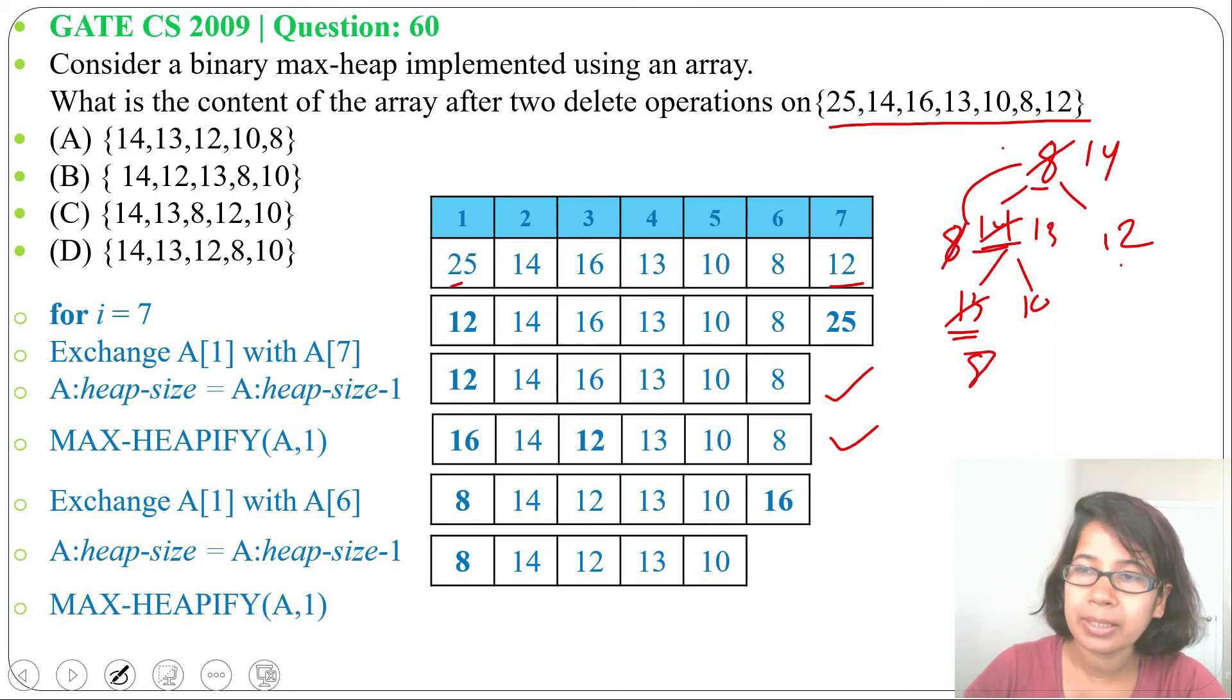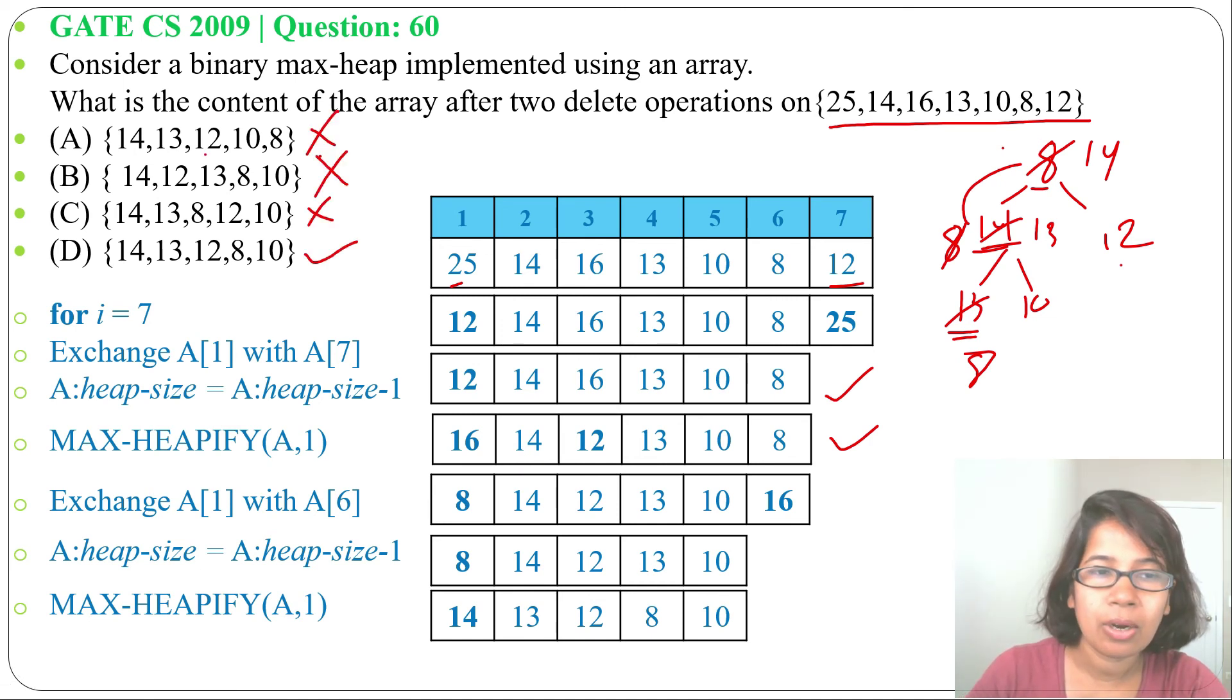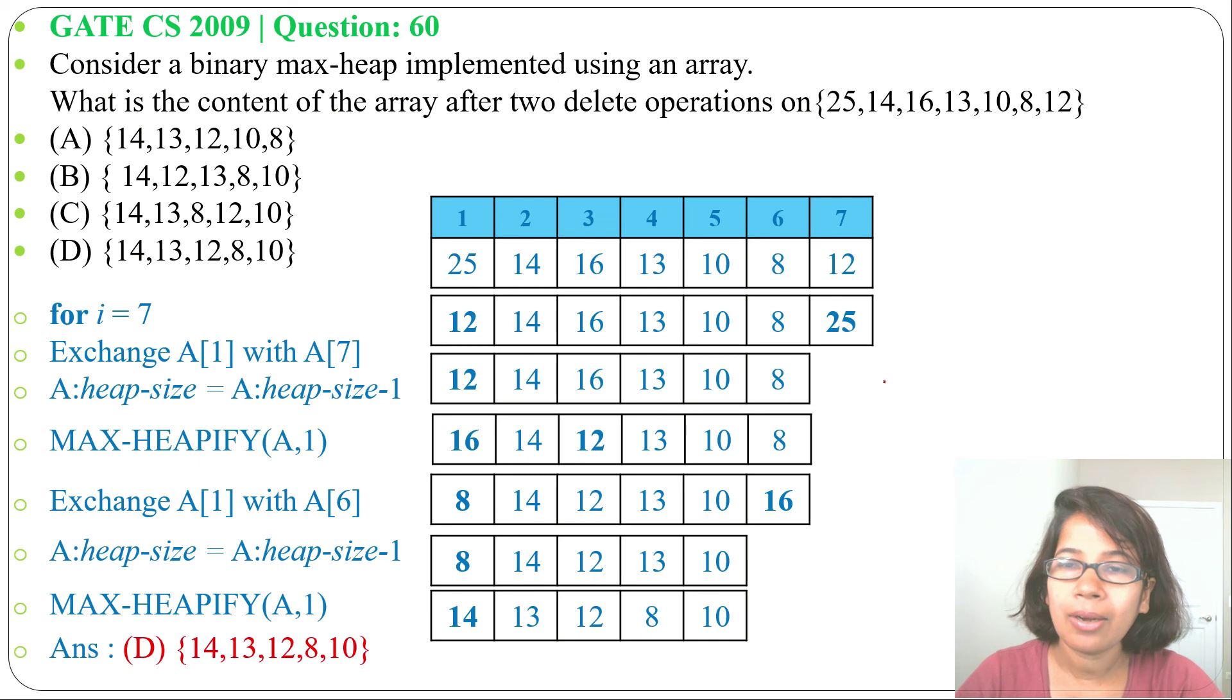So after maxify we got 14 as parent. 14's children are 13, 12, and 13's children are 8 and 10. So answer is option D: 14, 13, 12, 8, 10. After two deletions we got this array.